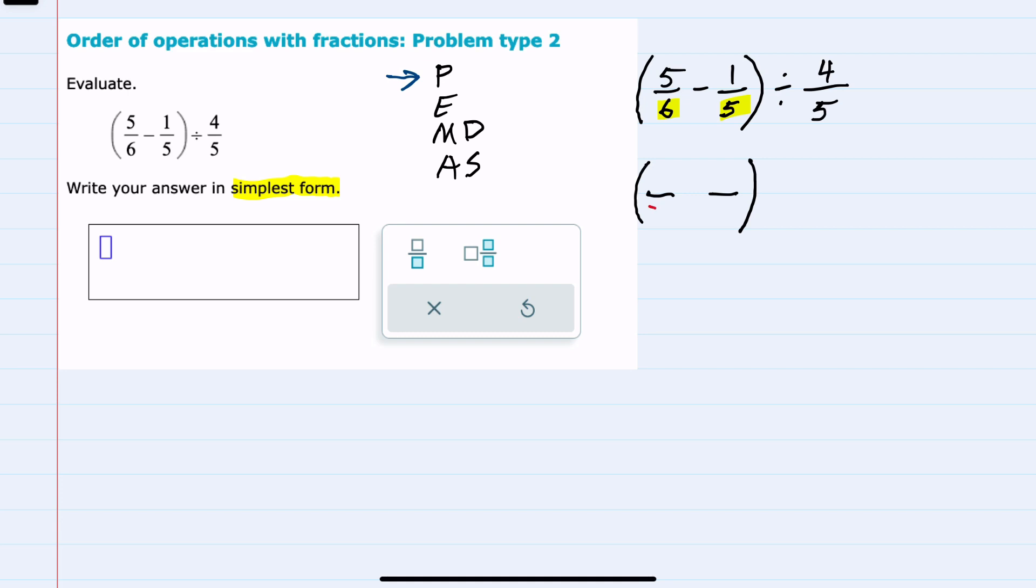So I would want to rewrite that first fraction over 30 and the second fraction over 30 before I can do the subtraction. To do that rewrite for the first fraction, I would need to multiply the denominator by 5 to get 30, so I'd have to also multiply the numerator by 5, which gives me 25. For the second fraction to get 30, I would need to multiply by 6, meaning I would also multiply the numerator by 6. 1 times 6 is just 6. So we've rewritten this part inside the parentheses to now have a common denominator.